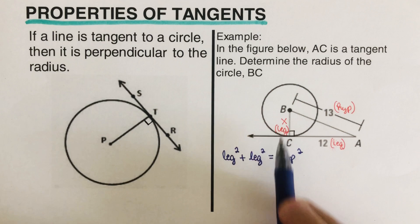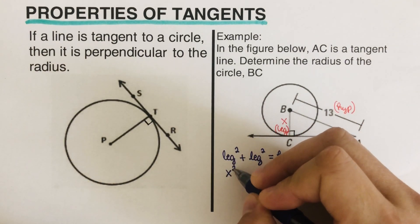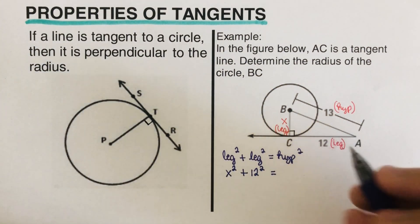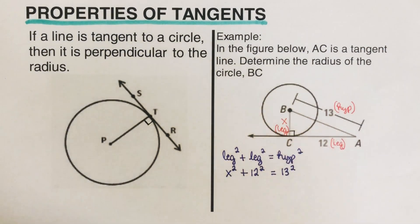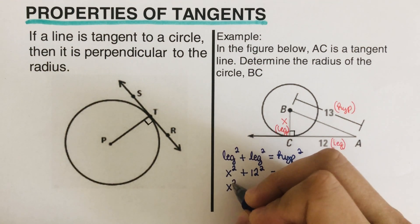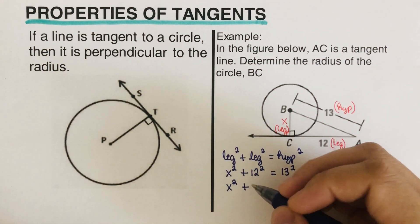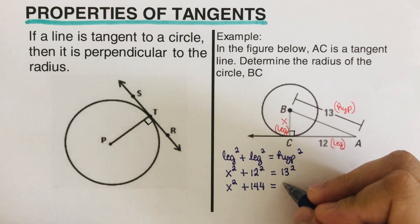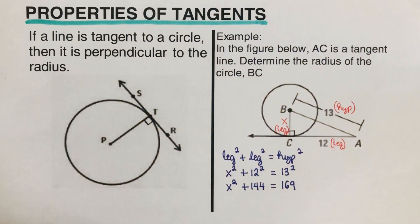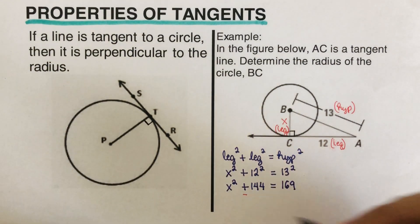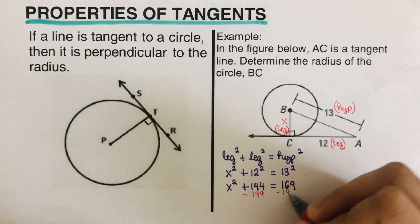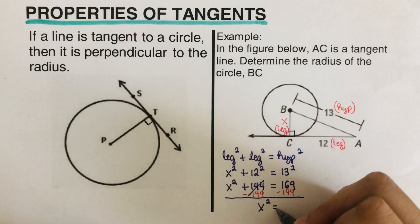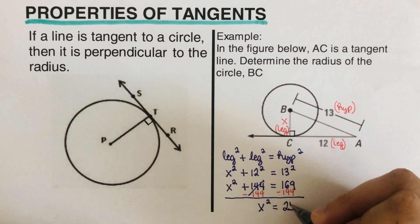We can plug the values into the equation. Our first leg is x, so: x squared plus 12 squared equals 13 squared. Simplifying: x squared plus 144 equals 169. We want x by itself, so we subtract 144 from both sides. We are left with x squared equals 169 minus 144, which is 25.